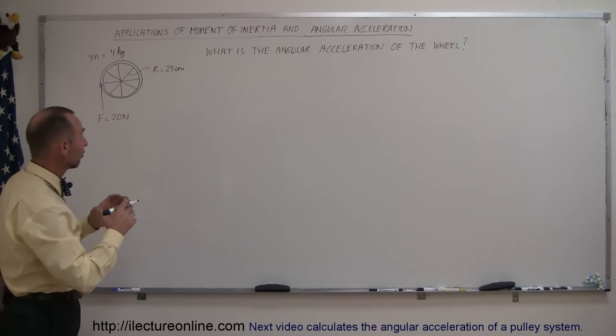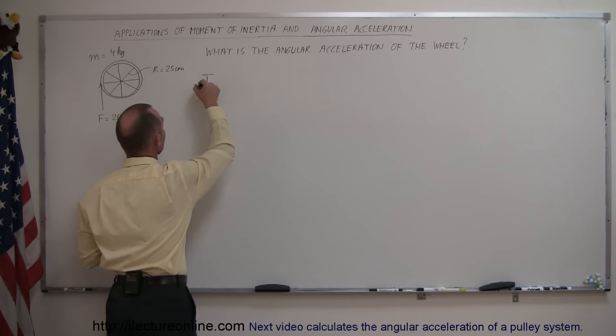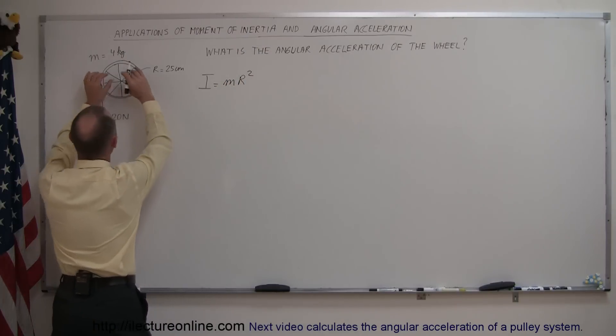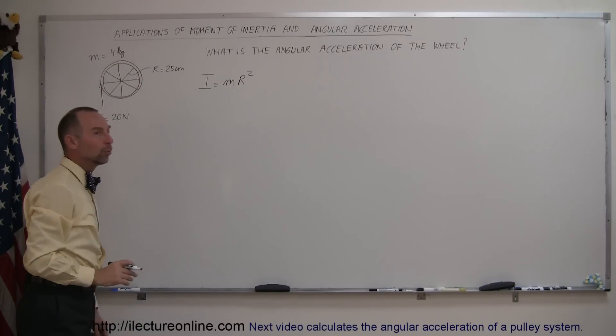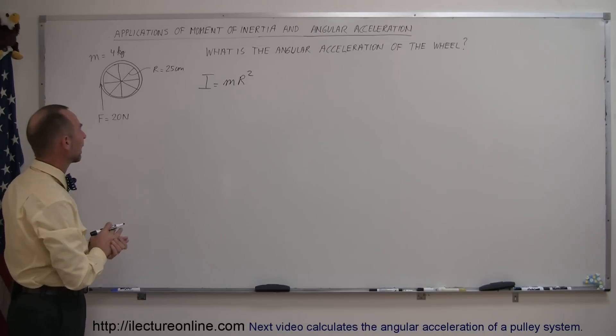So, first of all, we understand that since it's an object that can rotate, it has moment of inertia. So I, in this case, will be mR squared, because it looks like all the mass is distributed at the very end of the radius of the object. The spokes can be assumed to be very light and do not play a role in this.